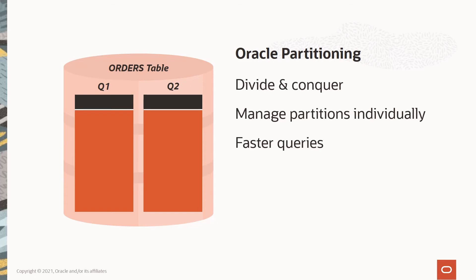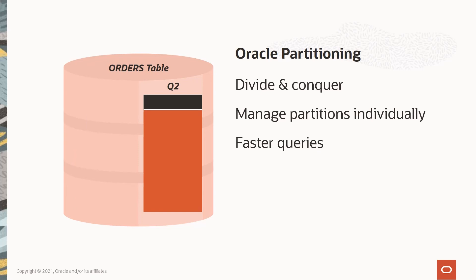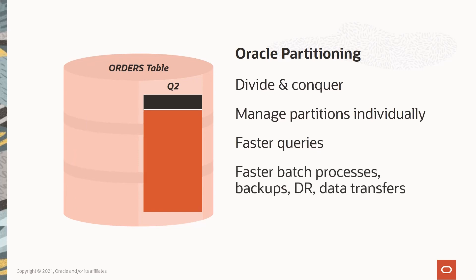For example, for a query that filters on order date equal to April, we can immediately narrow the search to the Q2 partition, eliminating all other partitions. This can also speed up many of our other administrative operations.